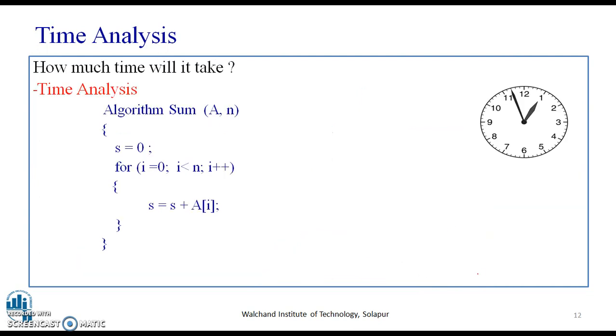Moving ahead to the next example, the algorithm sum. Here you have the algorithm sum with A and N. Perform the addition of this array of N numbers. Here we have a loop. When we say we want to analyze the working of this algorithm, we have to understand how much function of time, that is unit of time, are required for executing this loop.